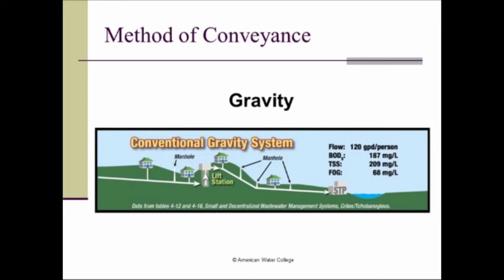In a gravity system, you have residences on a slightly sloping terrain. As the wastewater flows, it gets to a point where we need to use a lift station to lift it to a higher elevation and then on to the wastewater treatment plant. What's happening is the depth of the trench is getting too deep, so we raise it back up to a higher elevation. Without a lift station, the sewer system would have to maintain a very deep trench — especially to serve a house on a hill. So gravity moves the flow, assisted by a lift station.